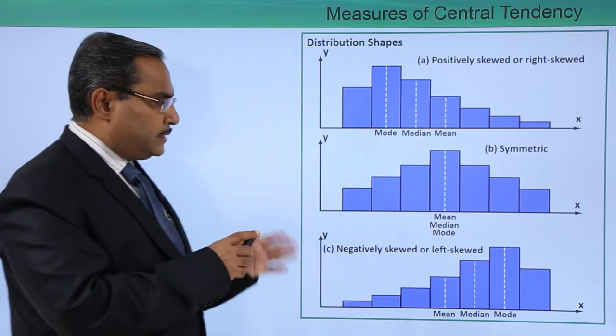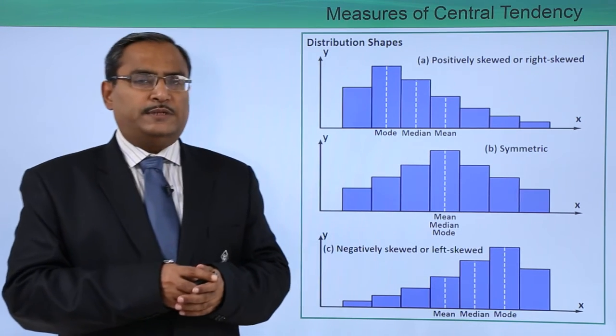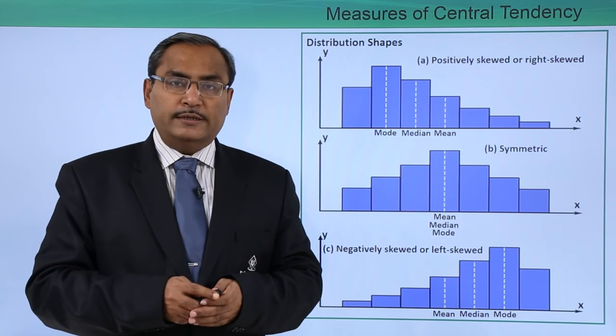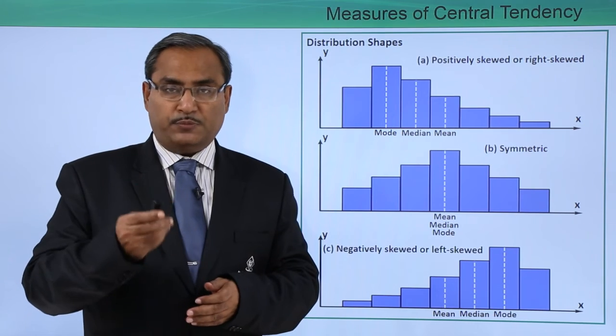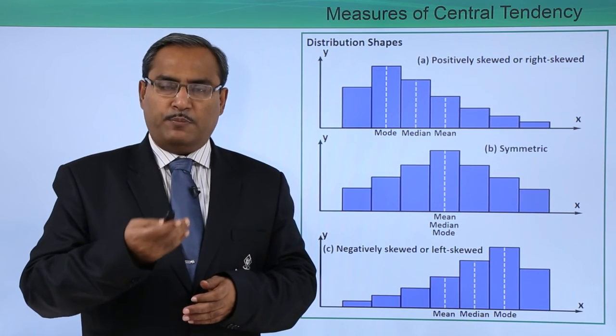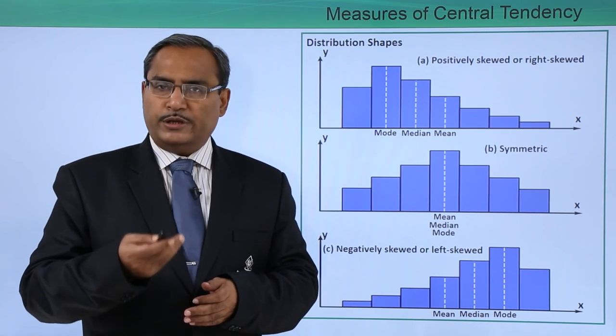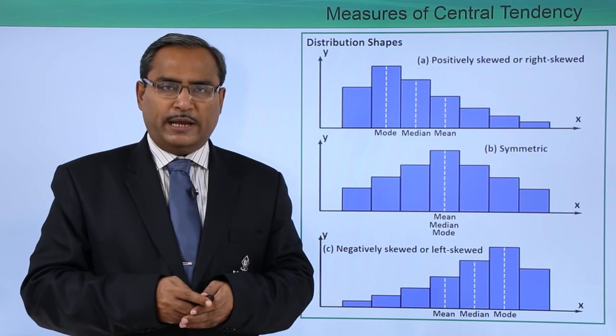In this way, we have discussed that in case of measures of central tendency, how the distribution shapes will play a vital role, and from the distribution shape we can easily guess the respective modal class or the class in which the mean and median will be existing.